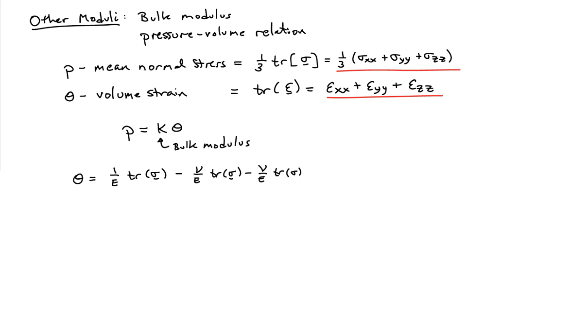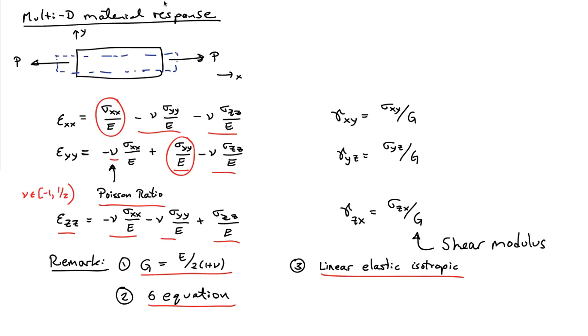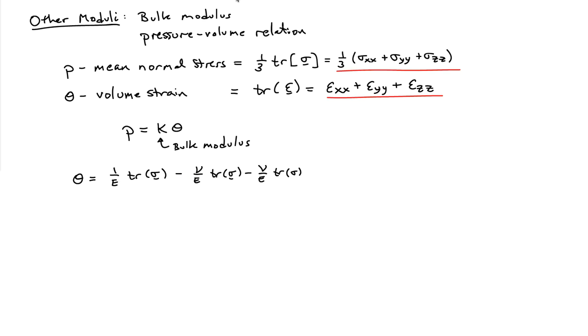So theta is equal, if I add up epsilon xx, epsilon yy, and epsilon zz from the previous slide. So if I take these three relationships and just sum them, then on the left-hand side I'm going to get the volumetric strain. And then on the right-hand side I'm going to collapse all the terms that you're looking at.